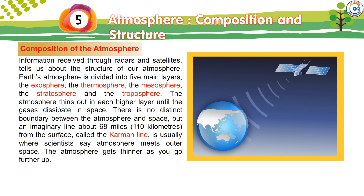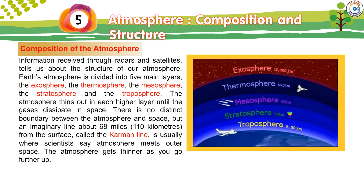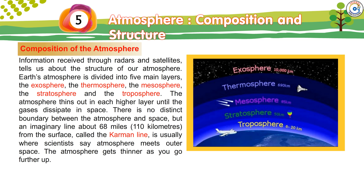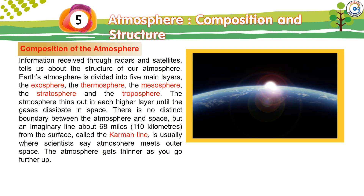Earth's atmosphere is divided into five main layers: the exosphere, the thermosphere, the mesosphere, the stratosphere, and the troposphere. The atmosphere thins out in each higher layer until the gases dissipate in space. There is no distinct boundary between the atmosphere and space, but an imaginary line about 68 miles (110 kilometers) from the surface, called the Karman line, is usually where scientists say atmosphere meets outer space.